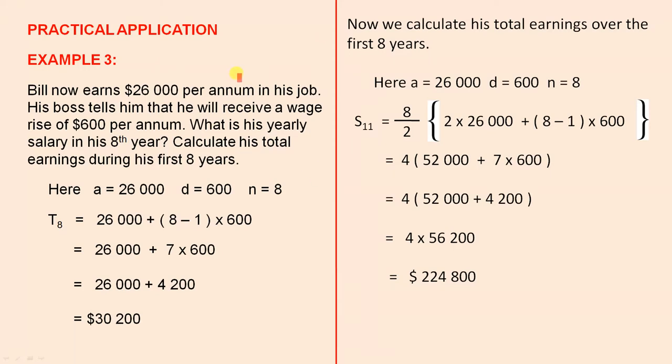Practical application. Example 3. Bill now earns $26,000 per annum in his job. His boss tells him that he will receive a wage rise of $600 per annum.